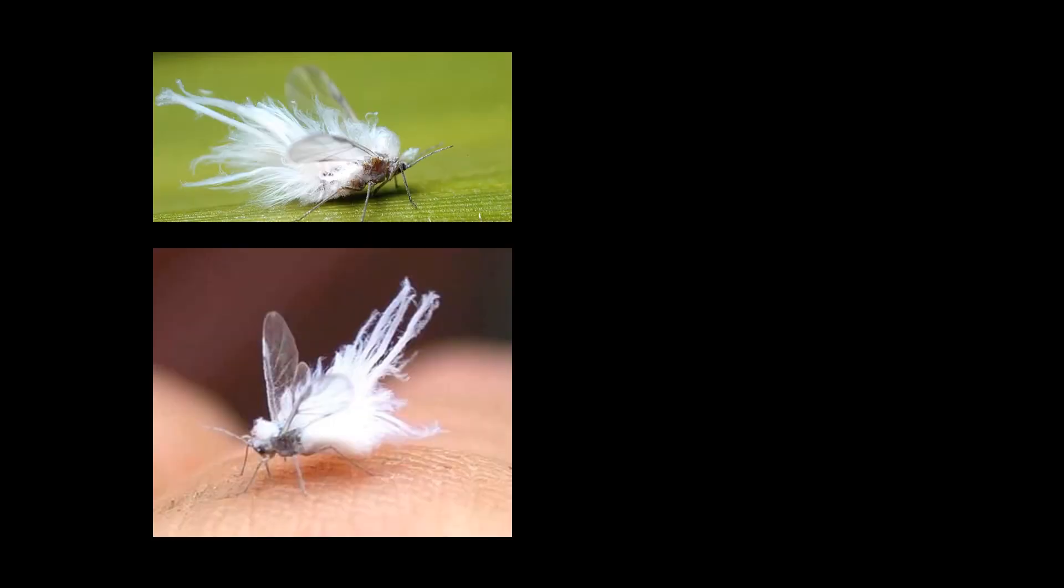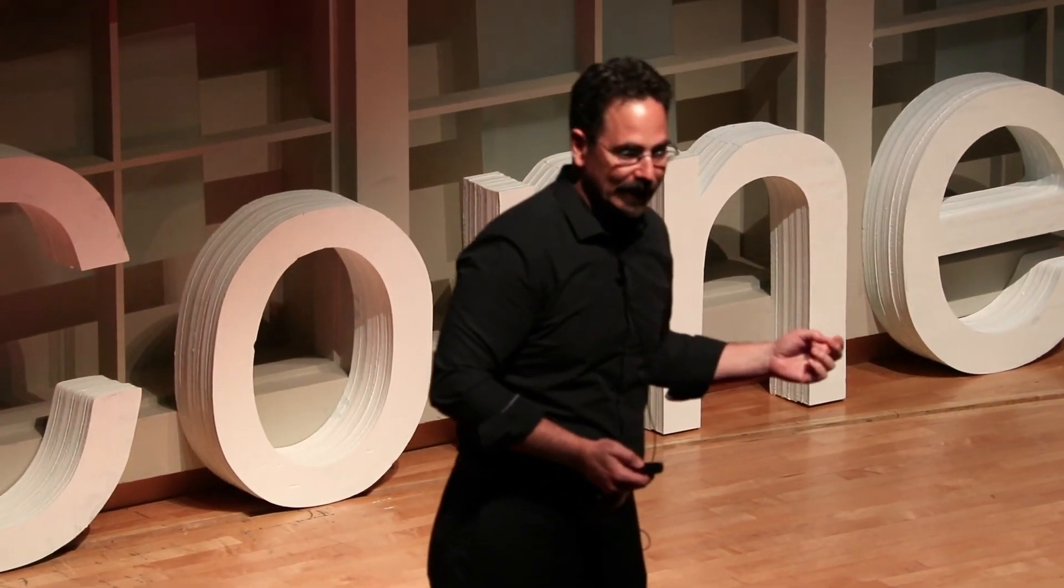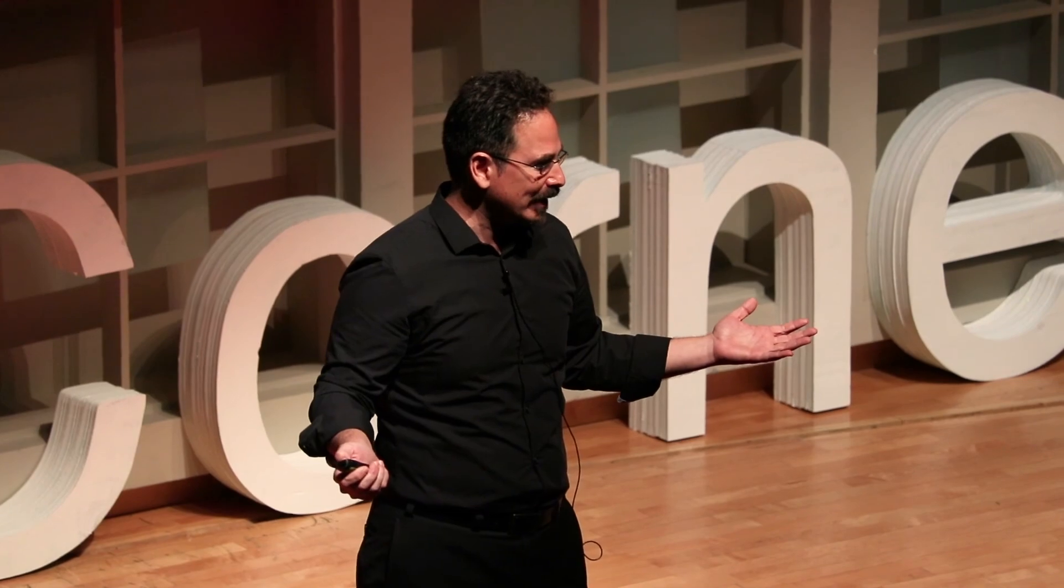So here are flies that have had their halteres glued down, and yet they can still maintain their flight. In fact, there are animals that already use this strategy. This is the woolly aphid. You can find it here in Ithaca. And it has all these tiny little hairs coming off its back. It doesn't need halteres to control its flight.